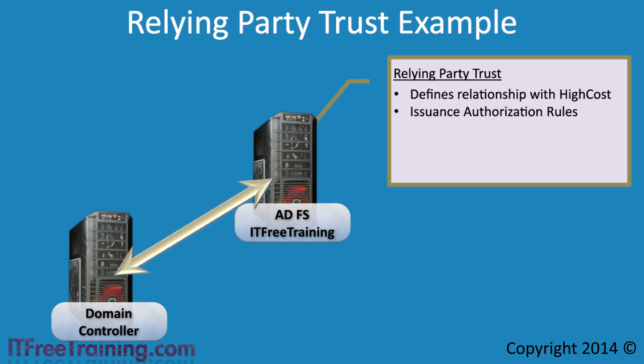These rules are called issuance authorization rules, and they define authorization. In this example, I have used Active Directory to define who can use the server to create claims. However, a rule could be created for just about anything — for example, the rule may state that the user only requires a valid email address. The rule could also query a SQL Server to allow access. Multiple rules could also be defined. For example, you could define one rule which allows access only to domain users, but also create a second rule which denies users the ability to connect from a particular IP address — perhaps you only want external users using the server and internal users to be blocked.